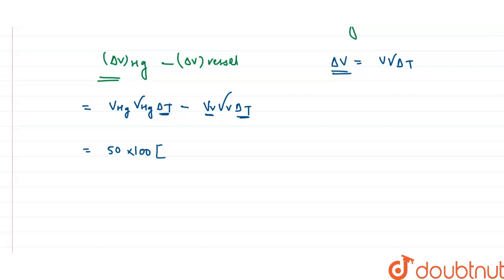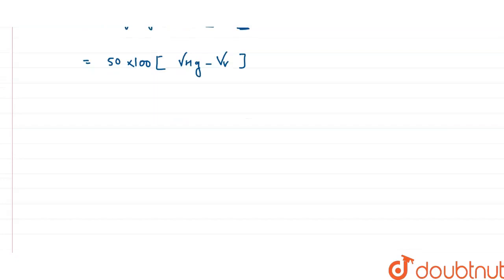So we have the expression: 100 times delta T times (gamma_Hg minus gamma_vessel). Substituting the values: gamma_Hg is 1.8 into 10 to the power minus 4, minus gamma_vessel which we already calculated as 5.4 into 10 to the power minus 6.